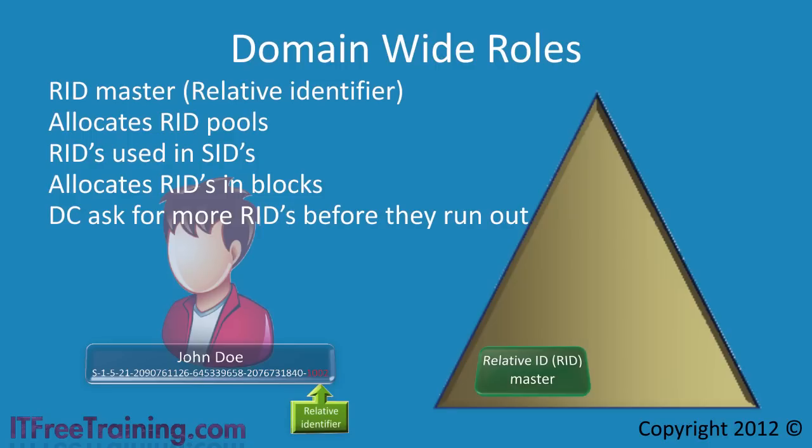Keep RID master availability in mind if you have a need to create a lot of Active Directory objects at once. For example, if you need to create a large amount of user accounts at once, you don't want your domain controller to run out of relative IDs halfway through the process when the RID master is not contactable.